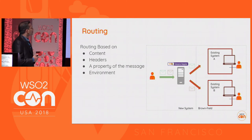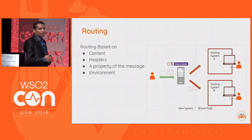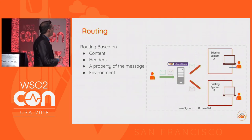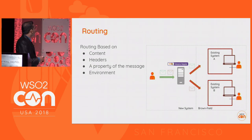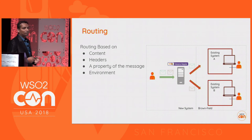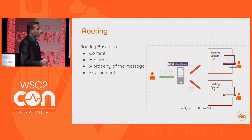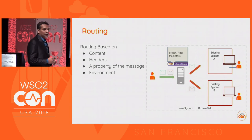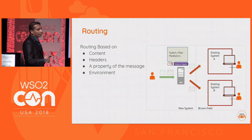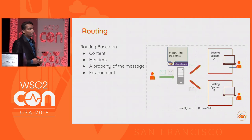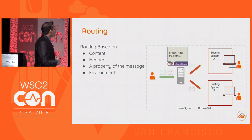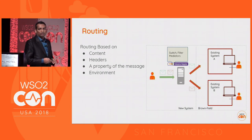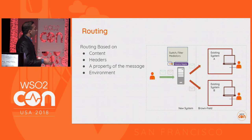Next we have routing. Routing can be based on the content of the message, the headers of the message, some property of the message, or even some property of the environment. To do routing, we have two mediators: the Switch mediator, which is similar to the switch-case programming construct, and the Filter mediator, which is similar to the if-else construct. Using those two mediators, we can route messages to different systems.